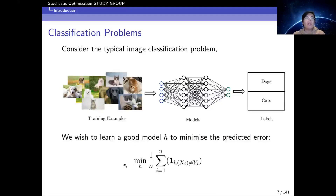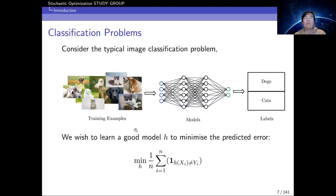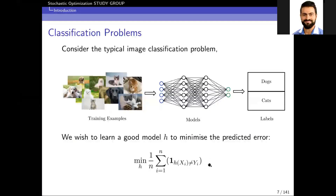Mathematically, Xi denotes the training samples, Yi denotes the corresponding label, H is the model that receives training samples and outputs the predicted label, and this indicator function gives an error of zero if the model produces the correct result — for example, given a cat image it produces the label 'cat' — and an error of one otherwise. So we wish to learn a model that can distinguish given samples as correctly as possible.